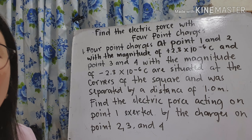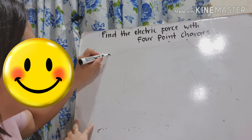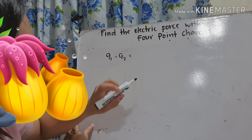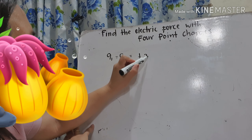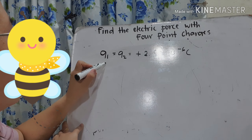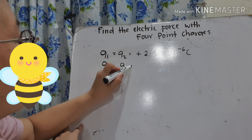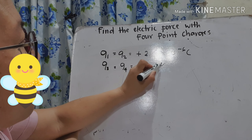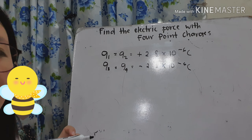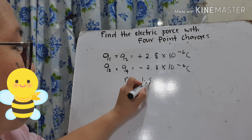Let's write down the given. We have Q1 equal to Q2, which is equal to positive 2.8 times 10 raised to negative 6 coulombs. Then Q3 is equal to Q4, equal to negative 2.8 times 10 raised to negative 6 coulombs. Our R, or the distance, is equal to 1.0 meter.